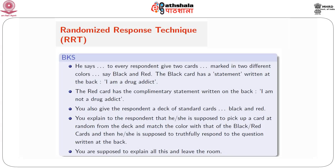He says: to every respondent you give two cards. These two are marked in two different colors — say black and red. The black card has a statement written at the back: 'I am a drug addict.' The red card, on the other hand, has the complementary statement written at the back: 'I am not a drug addict.' You also give the respondent a deck of standard cards, black and red. The idea is that you have a collection of black and red standard cards as available for card playing, and you have an unequal number of black cards versus red cards — maybe 20 black cards and 15 red cards, for example.